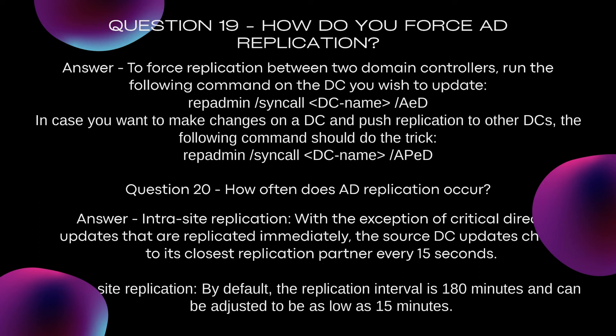Question 20: How often does AD replication occur? Intrasite replication: With the exception of critical directory updates that are replicated immediately, the source DC updates changes to its closest replication partner every 15 seconds. Inter-site replication: By default, the replication interval is 180 minutes and can be adjusted to be as low as 15 minutes.